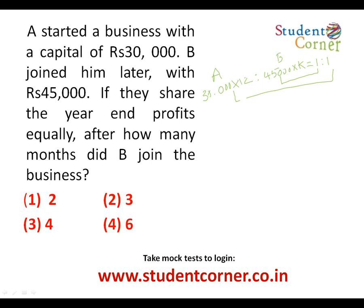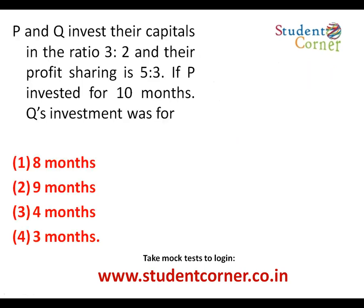Simplifying the ratios, thirty thousand into twelve versus forty-five thousand into K gives two into twelve equals three into K. So K equals twenty-four divided by three, which is eight. K equals eight months — that is how many months B participated. Since the year is twelve months and B was there for eight months, B joined after four months.